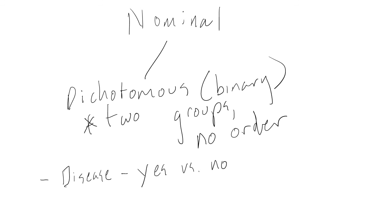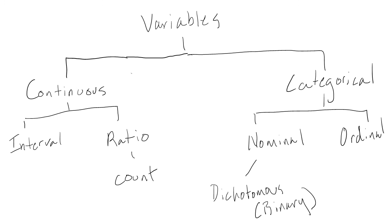A dichotomous variable, or a binary variable, is a special type of nominal variable when there are only two categories. For example, when we group people based on whether or not they have a disease — yes versus no — this would be a dichotomous variable. Once again, continuous variables are either ratio or interval, and categorical variables are either nominal or ordinal. The type of variable is going to influence what types of statistics we can use to analyze that variable.